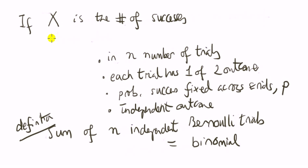To tie the binomial in with the Bernoulli, let's just write down the features of a random variable that follows a binomial distribution. If X is the number of successes in n number of trials, each trial has one of two outcomes, the probability of success is fixed across trials denoted by p, and the outcomes are independent.